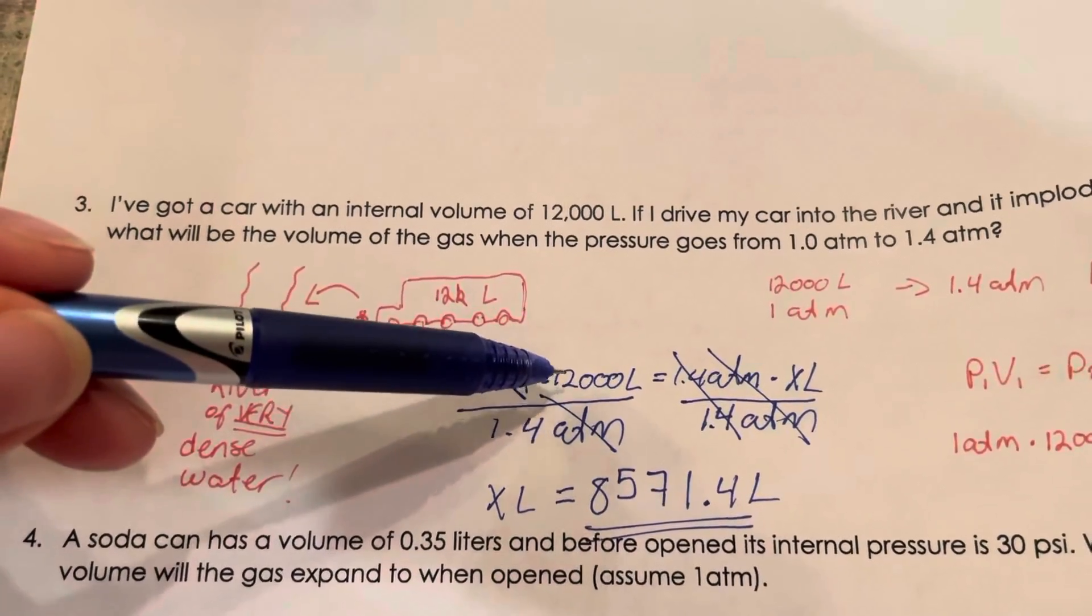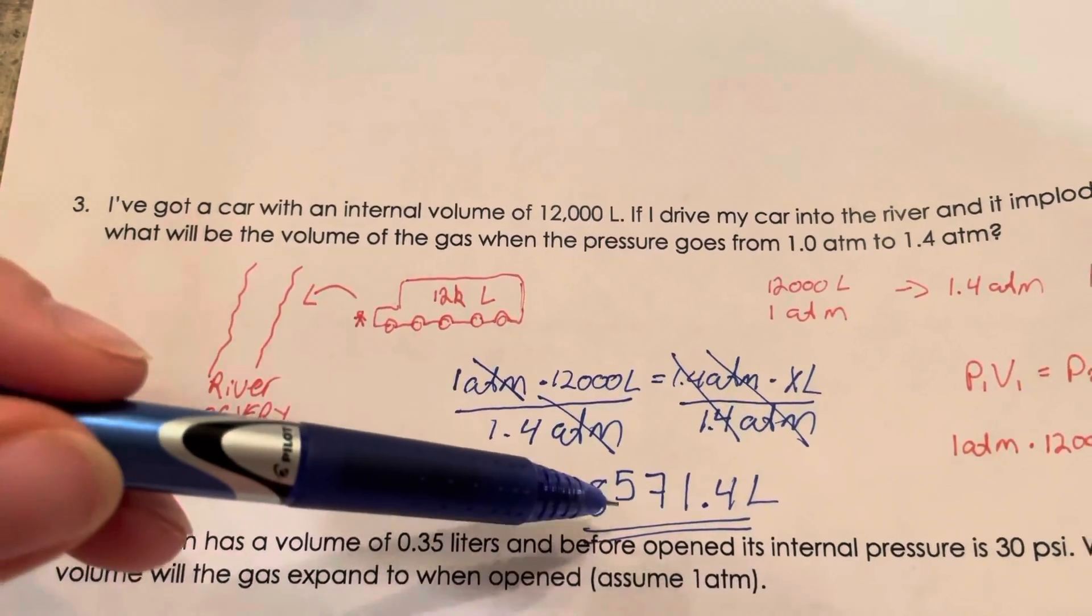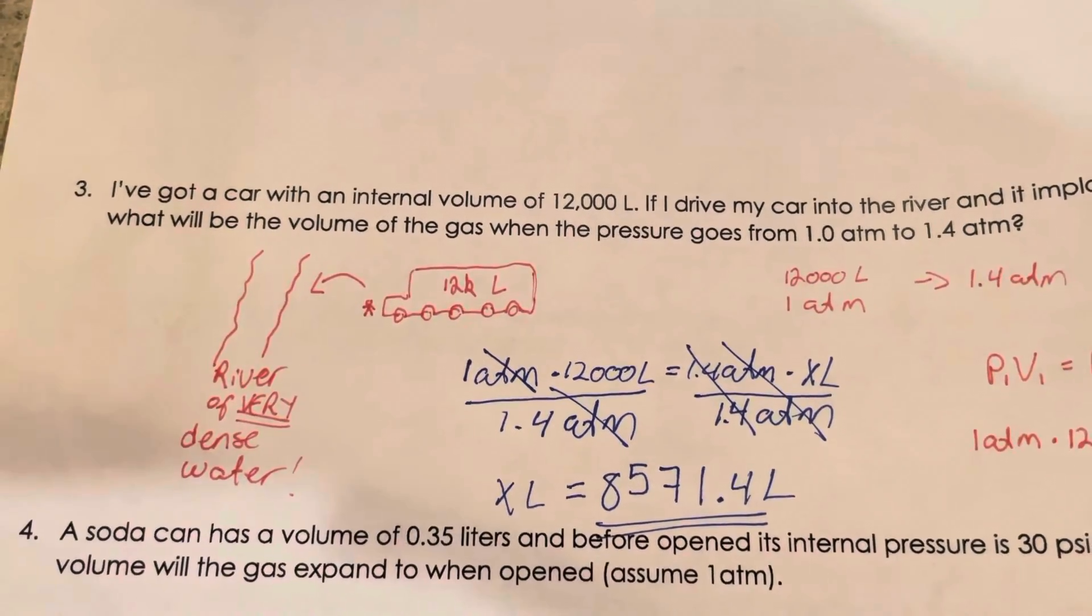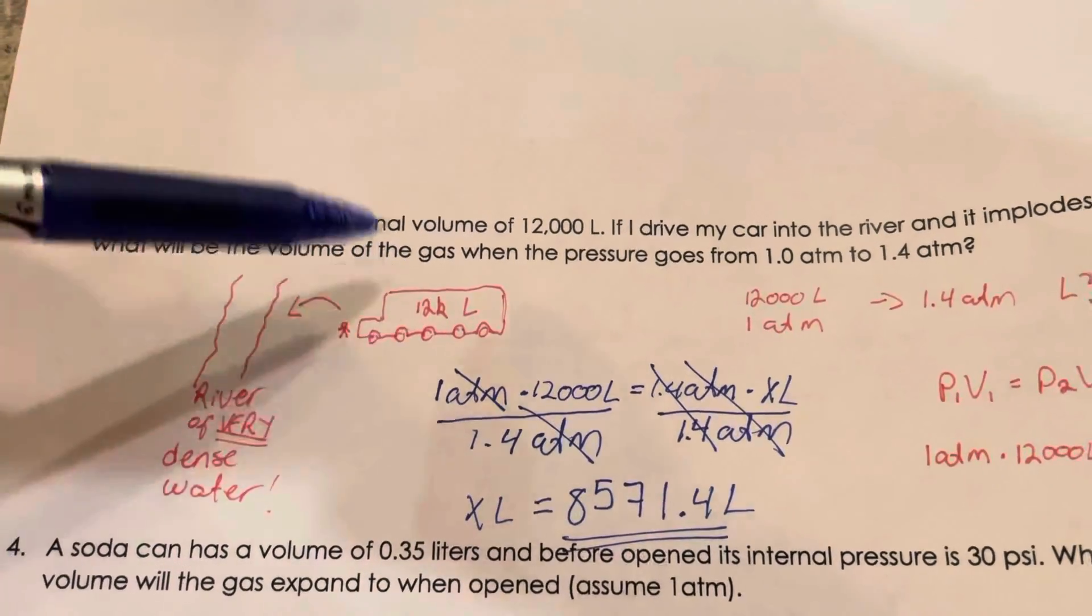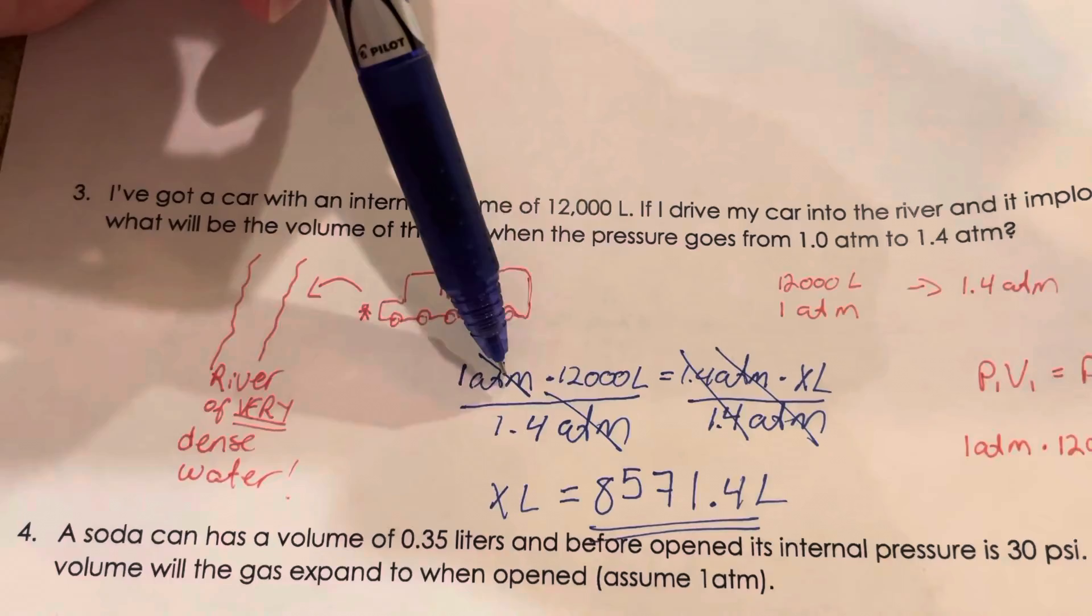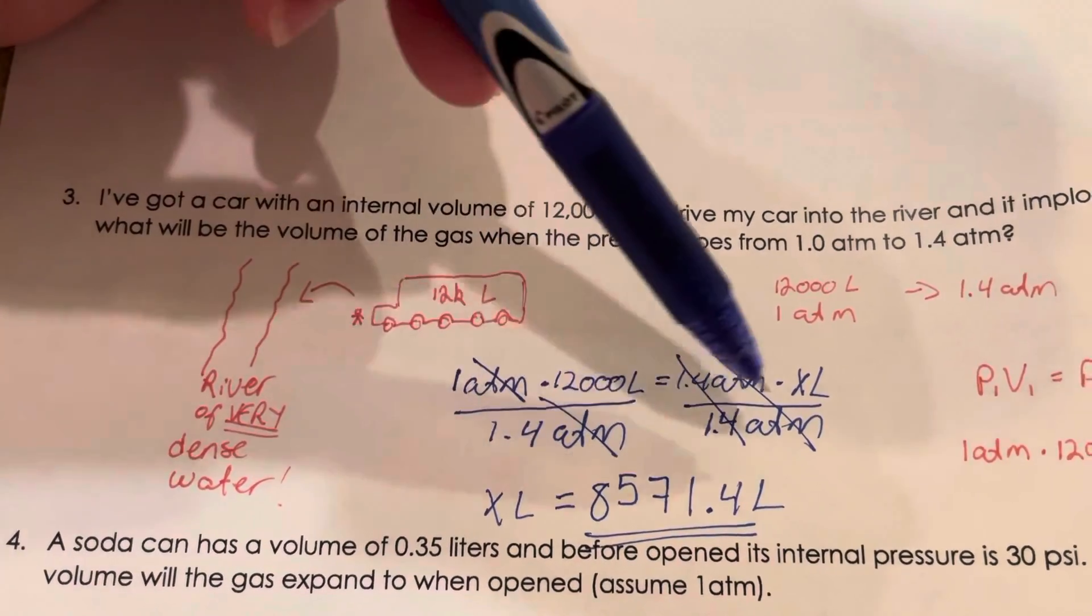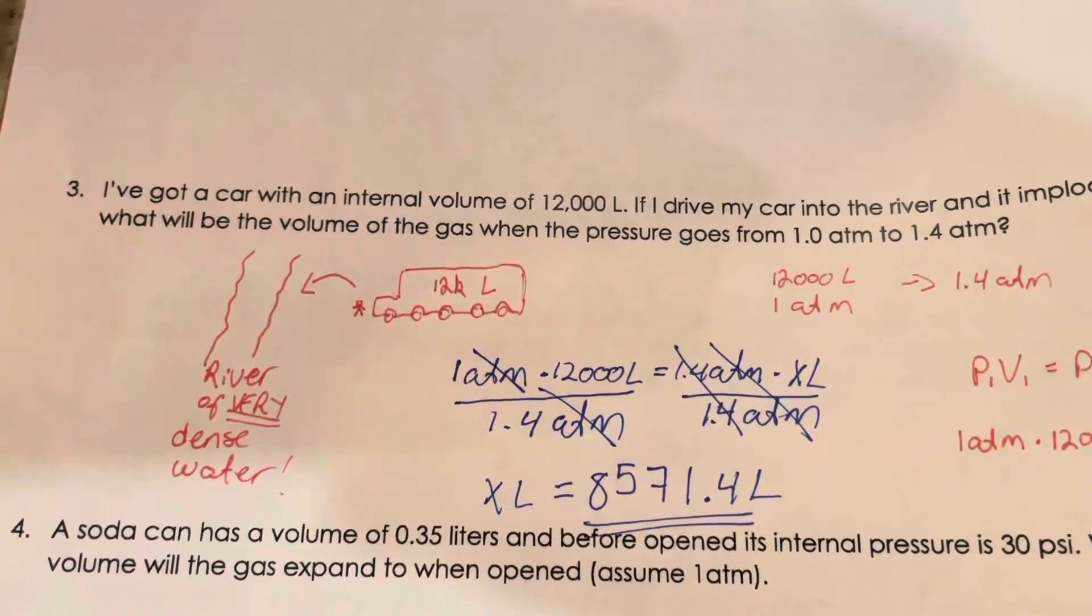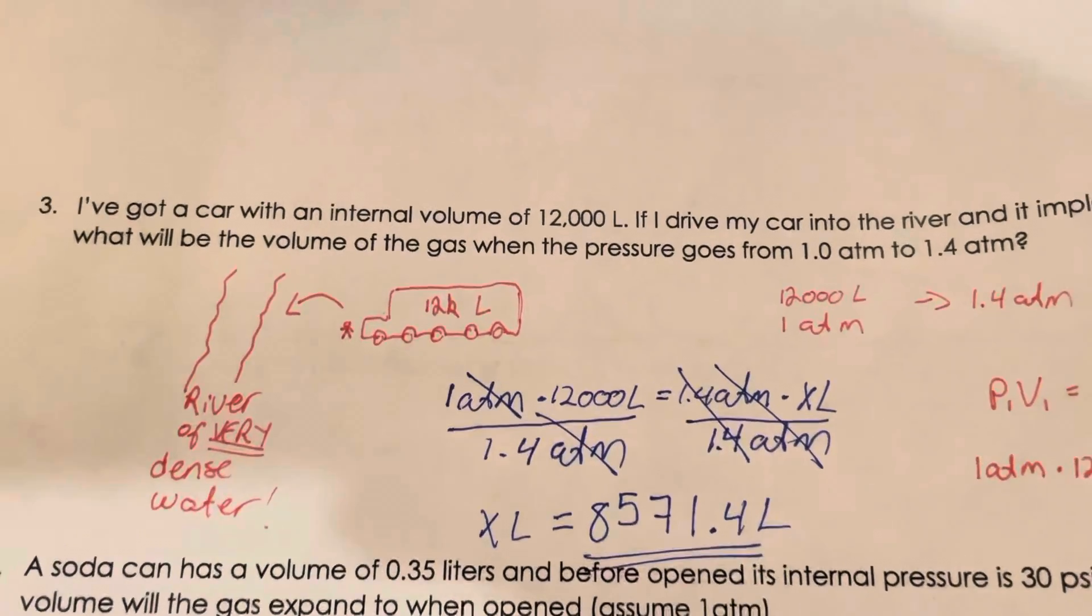Which makes sense because if something is getting more dense, if this truck implodes, I'm gonna end up with less volume. So 12,000 liters went to 8571.4 liters and it makes sense. And also since I carried all of my units all the way, I know that I haven't done anything wrong. I ended up with liters which I should do because my answer is volume.